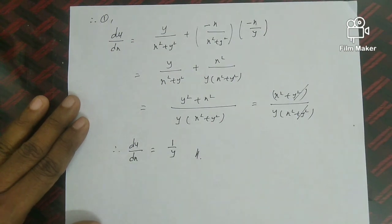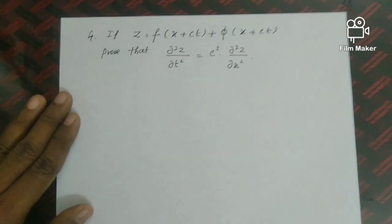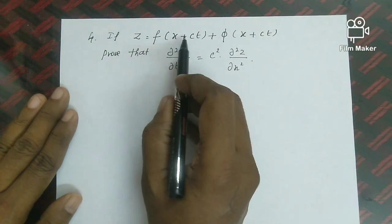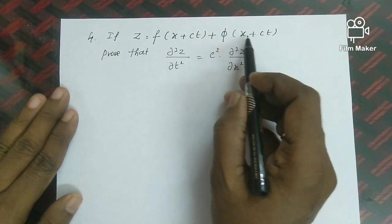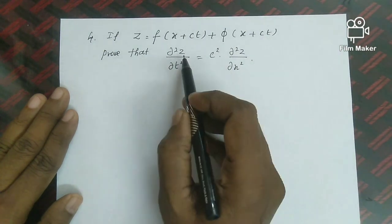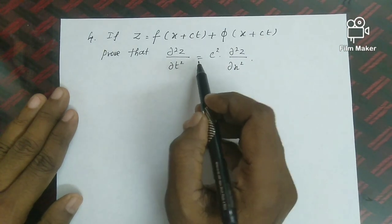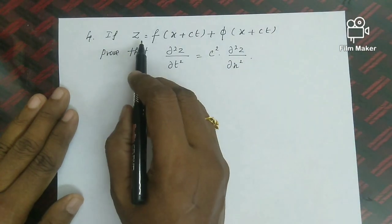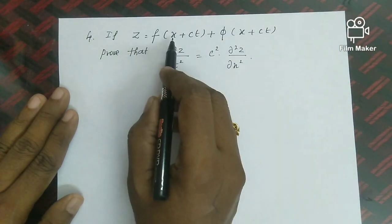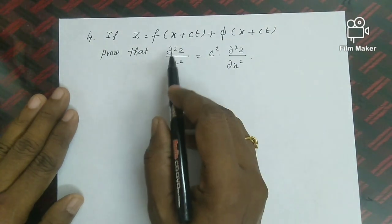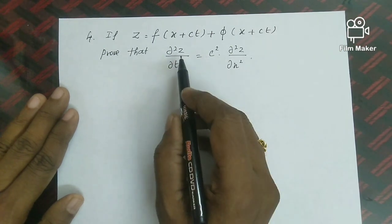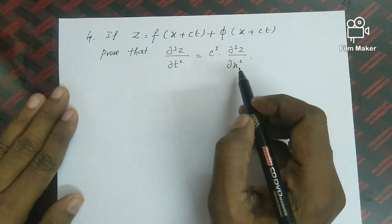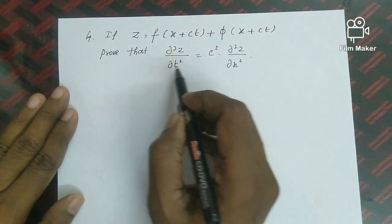So du/dx = 1/y. That completes the third sum using total differential and dy/dx. Last sum: If z = f(x + ct) + φ(x − ct), prove that ∂²z/∂t² = c²·∂²z/∂x².